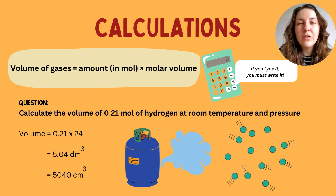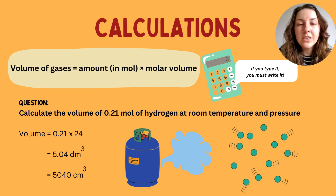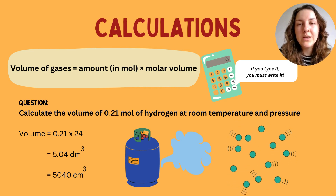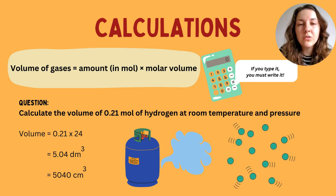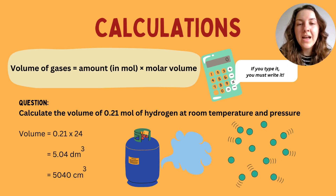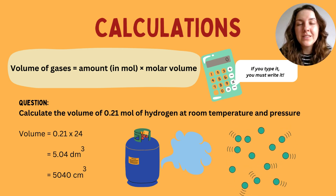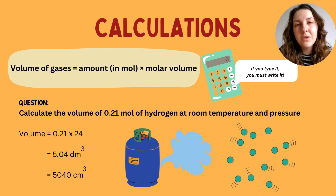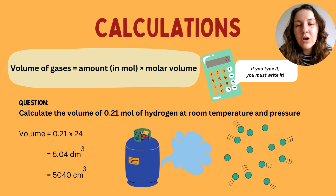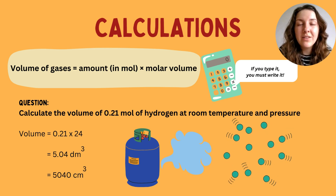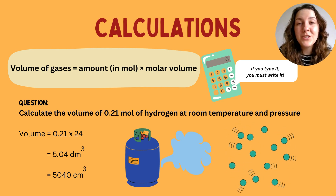The question is: calculate the volume of 0.21 moles of hydrogen at room temperature and pressure. At room temperature and pressure the gas will occupy the molar volume of 24 decimetres cubed. So all you do is multiply the amount of moles — 0.21 — by the molar volume of 24, and you get an answer of 5.04 decimetres cubed. We can also be expected in the exam to convert decimetres cubed into centimetres cubed — all you need to do is multiply by 1000, giving 5040 centimetres cubed.